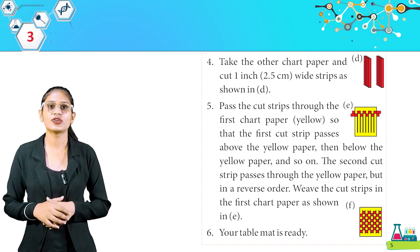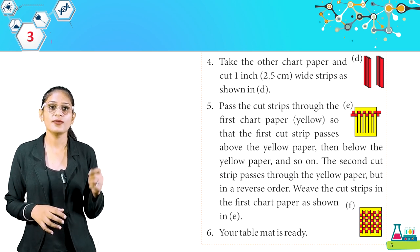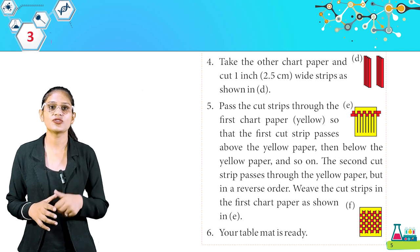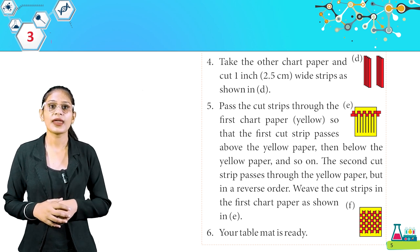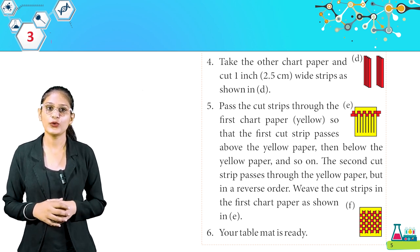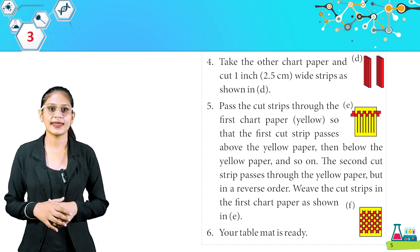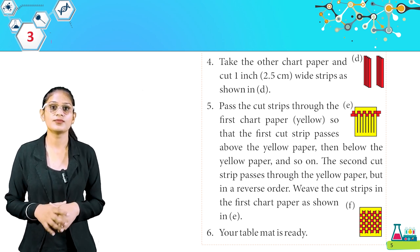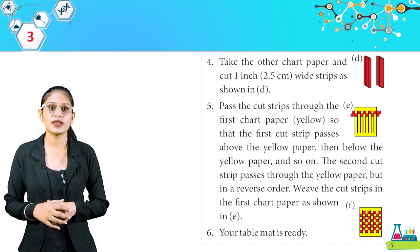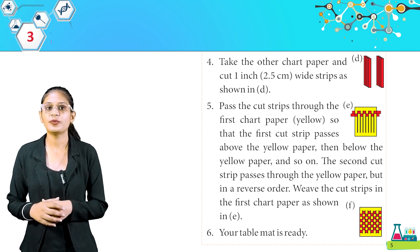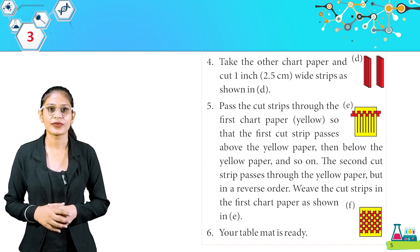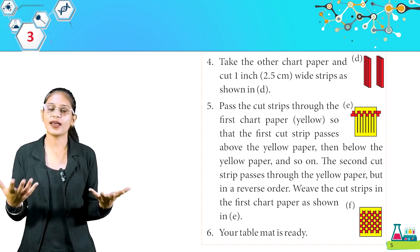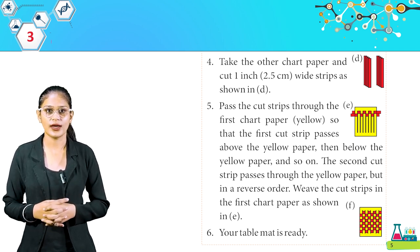Take the other chart paper and cut one-inch (2.5 cm) wide strips as shown in figure D. Pass the cut strips through the first chart paper so that the first strip passes above then below the paper alternately. The second strip passes in reverse order. Weave the strips through the first chart paper as shown in figure E, and your table mat is ready.